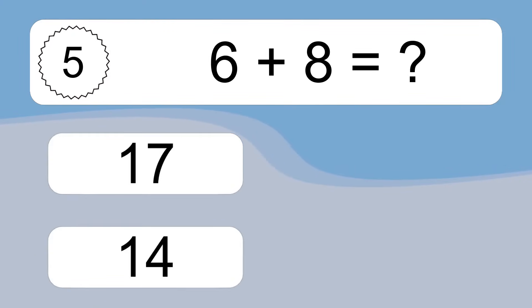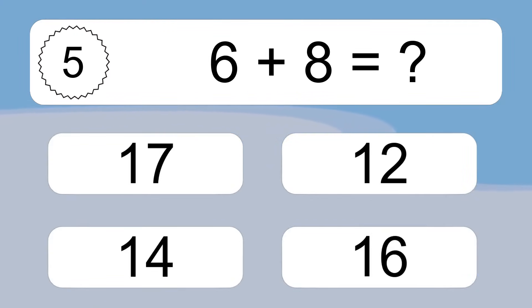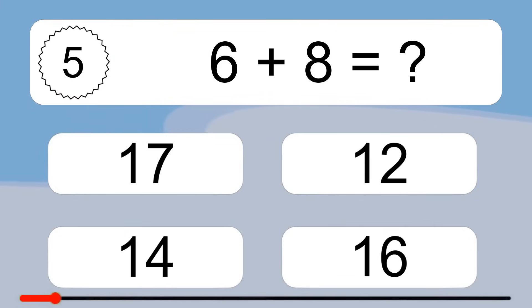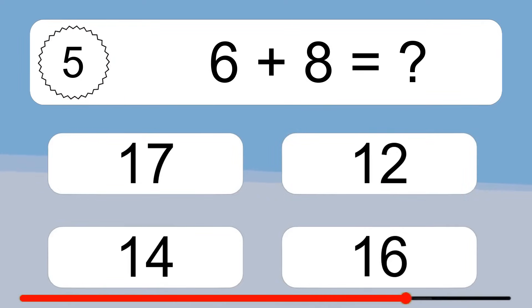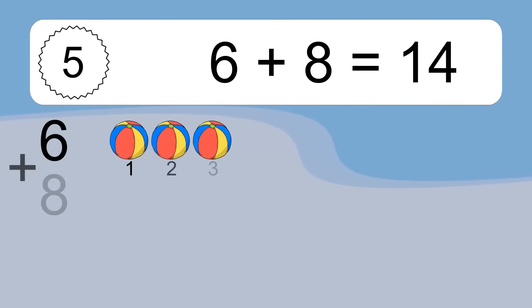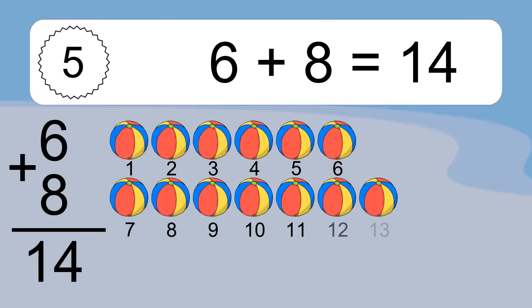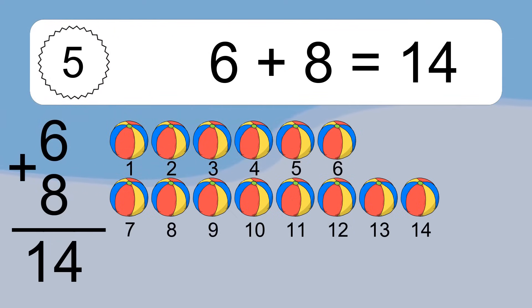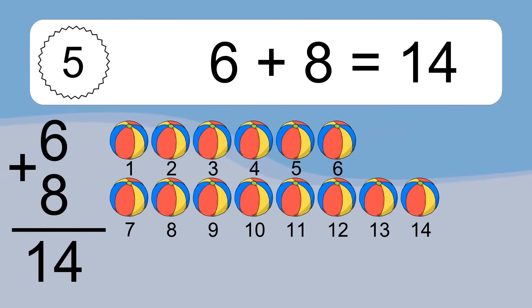6 plus 8 equals what? 6 plus 8 equals 14. Let's count it: 1, 2, 3, 4, 5, 6, 7, 8, 9, 10, 11, 12, 13, 14.